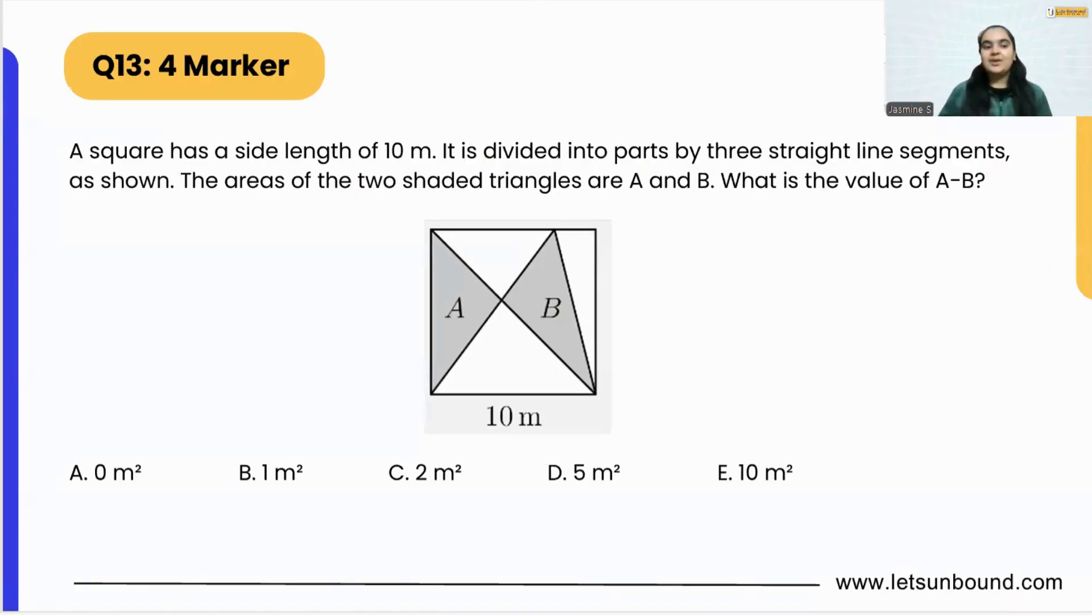The question is: A square has a side length of 10 meters. This is a square which is having the side length of 10, meaning the bottom, top, left or right—all four sides are 10 meters.